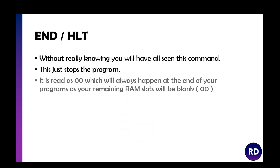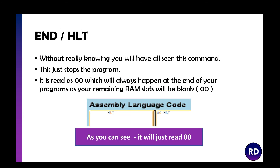HLT — or halt — is a command that stops the program. All remaining RAM slots are 00, so the program will automatically halt. The code you need to write is HLT, and it just reads as 00 in machine code. It's called 'end' or 'halt' in plain language but the actual instruction keyword is HLT.